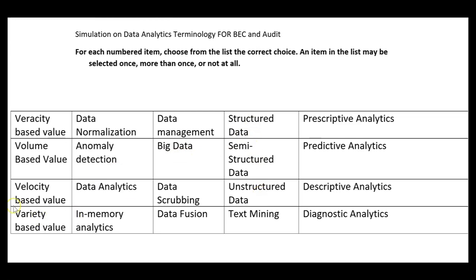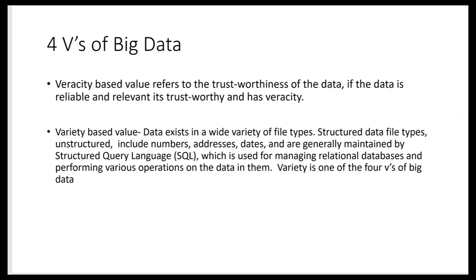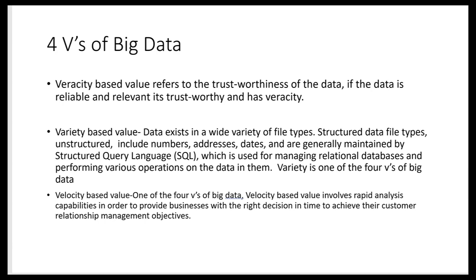Now I want to mention the four V's of big data: veracity, variety, velocity, and volume. Velocity and veracity sound similar but are very different terms. Variety-based value refers to the idea that data exists in a wide variety of file types — structured, semi-structured, and unstructured. That wide variety delivers value, and variety is one of the four V's of big data.